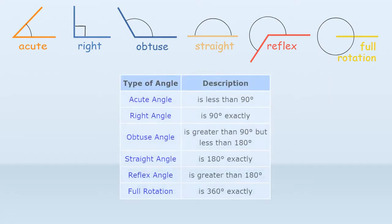An acute angle is less than 90 degrees. A right angle is 90 degrees exactly. An obtuse angle is greater than 90 but less than 180 degrees. A straight angle is 180 degrees exactly. A reflex angle is greater than 180 degrees, and a full rotation is 360 degrees exactly.